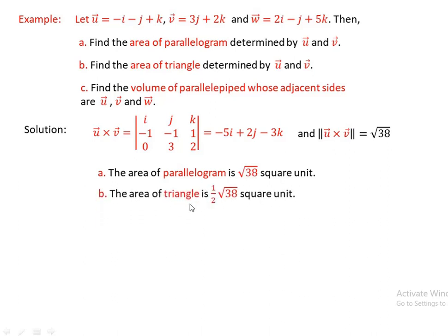For part (b), the area of the triangle is half the norm of u cross v. Since the norm of u cross v equals square root of 38, the area of the triangle is one half times square root of 38 square units.